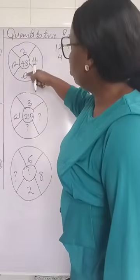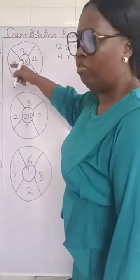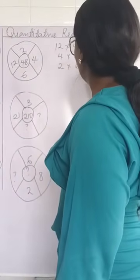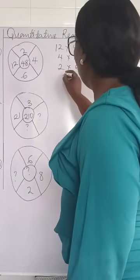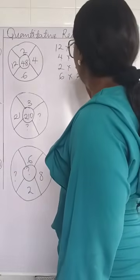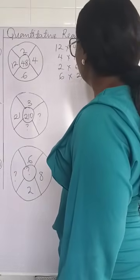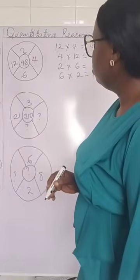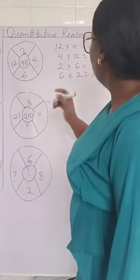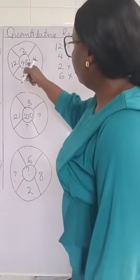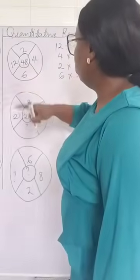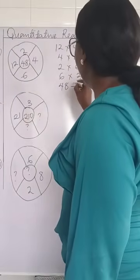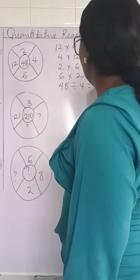We also see that 2 multiplied by 6 gives us 12 — so 2 times 6 gives us 12, or 6 times 2 also gives us 12. We also have division: 48 divided by 12 gives us 4, and 48 divided by 4 gives us 12.